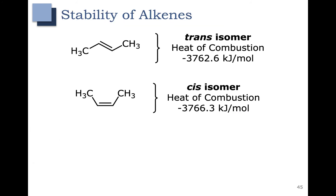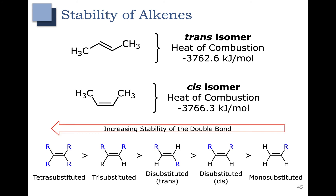Let's talk more about chemical properties. For this pair of diastereomers, in a combustion reaction we get different values — the heat of combustion for the trans isomer is different from that of the cis isomer. This tells us the trans isomer is more stable because it has a smaller heat of combustion and releases less energy. Comparing heats of combustion across alkenes shows a trend: a tetra-substituted alkene is much more stable than a tri-substituted one; the di-substituted cis and trans are in between, with trans more stable than cis; and a monosubstituted alkene is least stable.